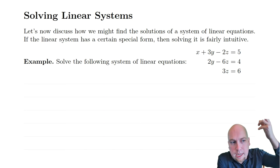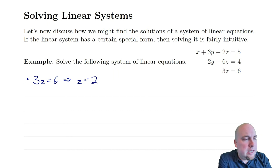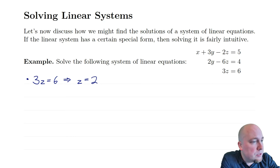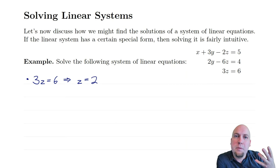Let's see how it works for this particular system of linear equations. Starting off, looking at the bottom equation: if 3z equals 6, we can just divide both sides by 3 to see that z must equal 2. And that's good, because once we know that z equals 2, we can plug that back into the two earlier equations and reduce the number of variables in the linear system by 1.